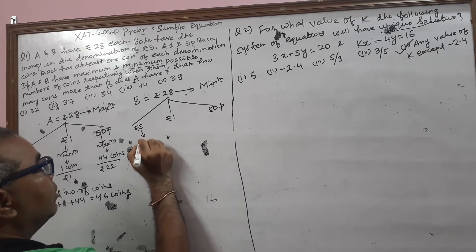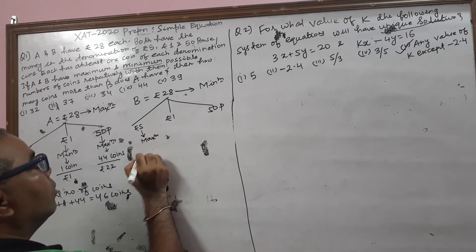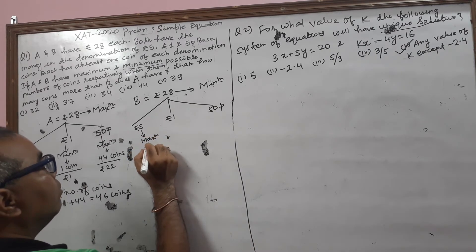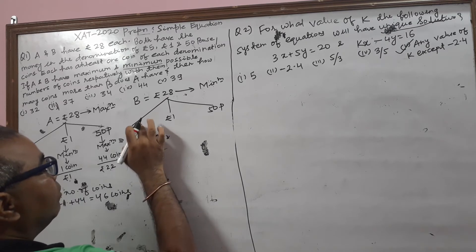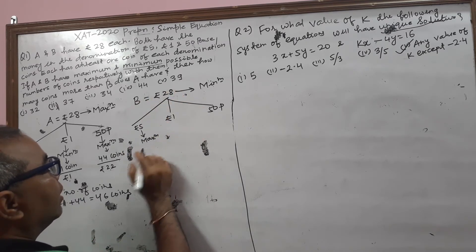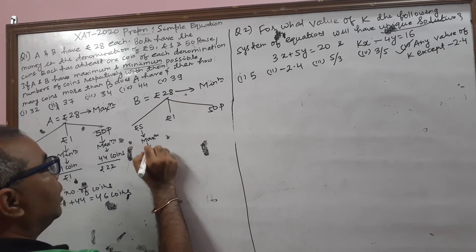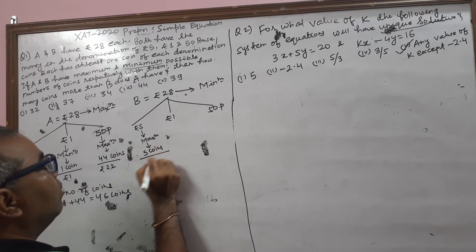Now B has coins in the same denominations: rupees 5, rupees 1, and 50 Paise coins. But it is the minimum number of coins, so the rupees 5 value is the maximum. Maximum in terms of rupees 5: 5 times 5 equals 25. On that condition, maximum he can take 5 coins, whose value will be rupees 25.